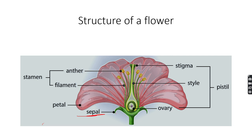The first part is the sepal. Sepals are basically the green petal-like structures present at the base of the flower. Next are the colorful parts of the flower, that is the petals. On the inner side of the petal, there are reproductive structures called stamen and pistil.